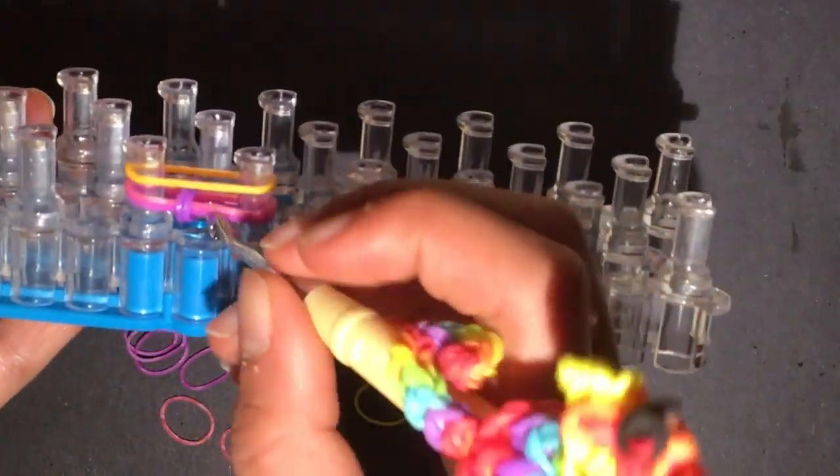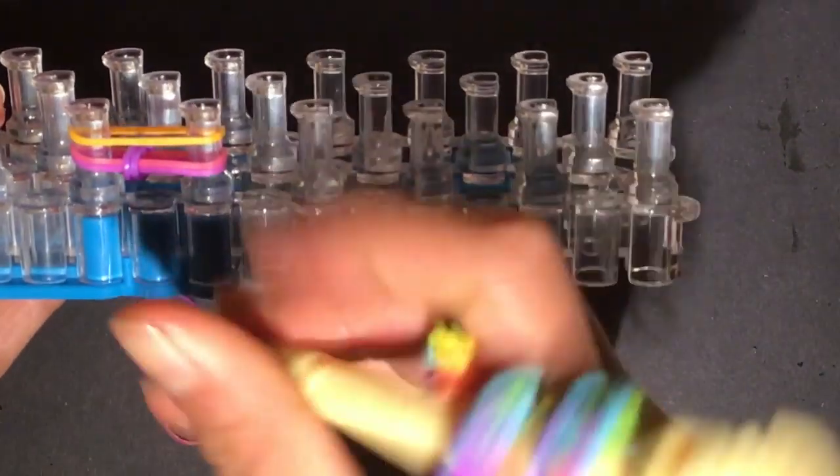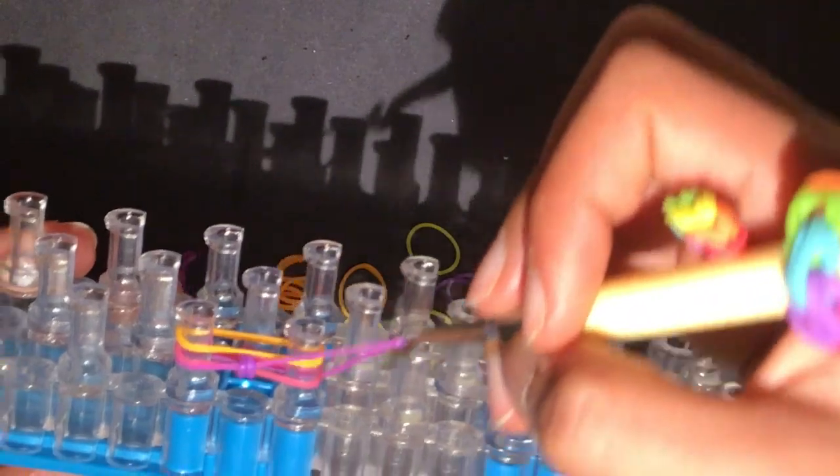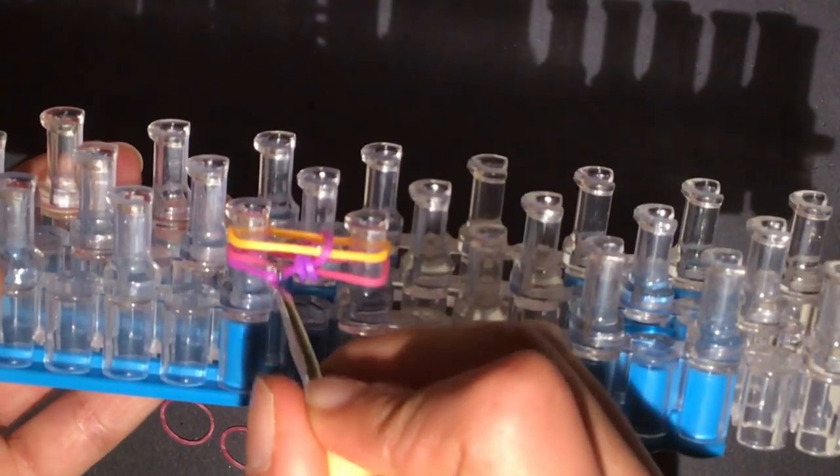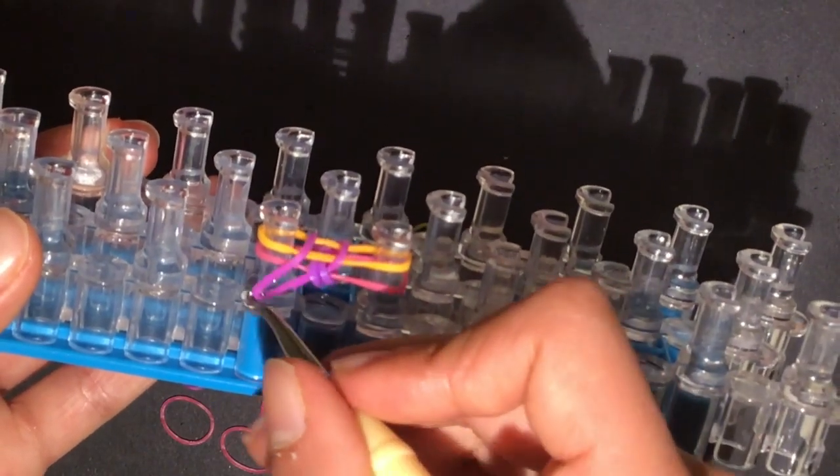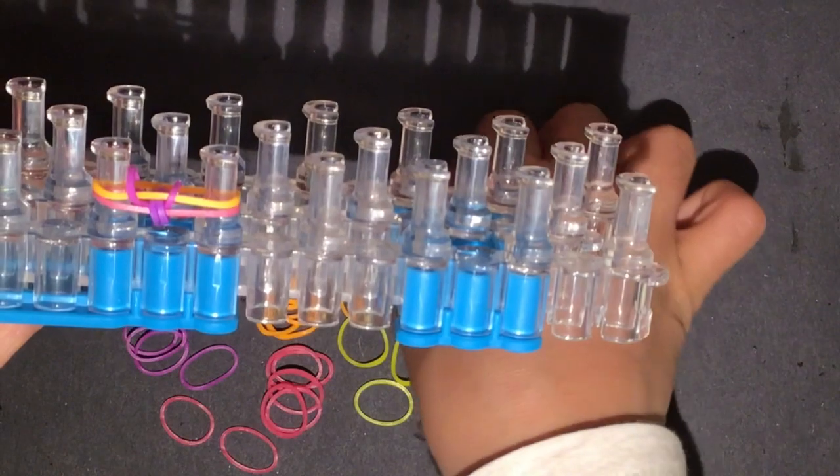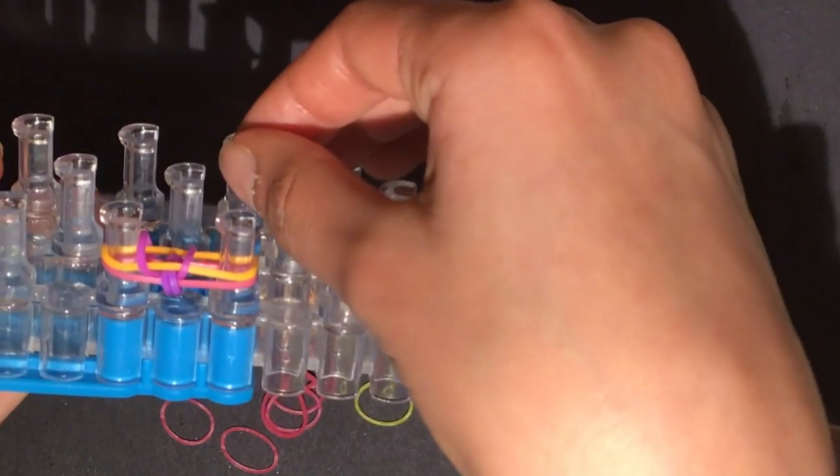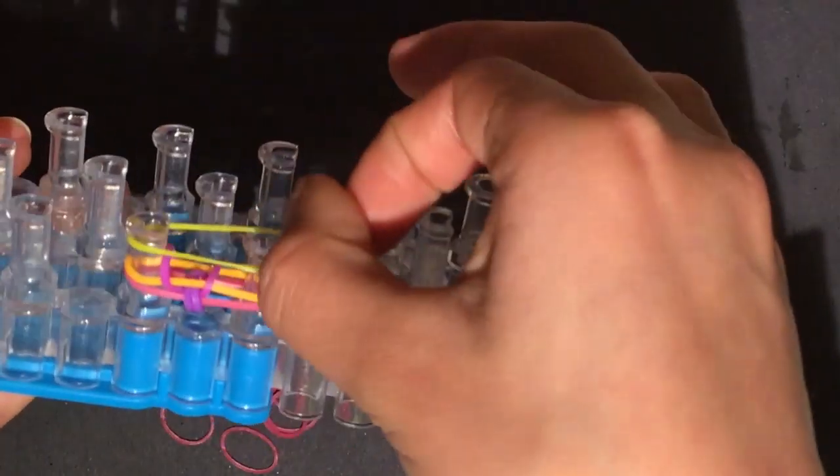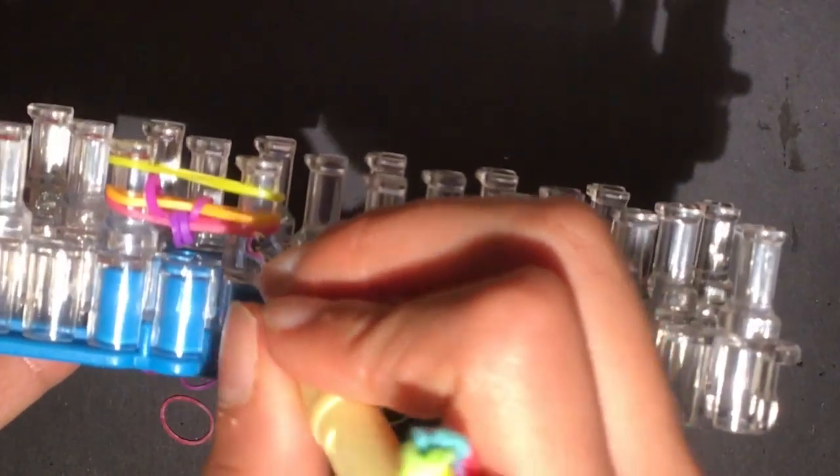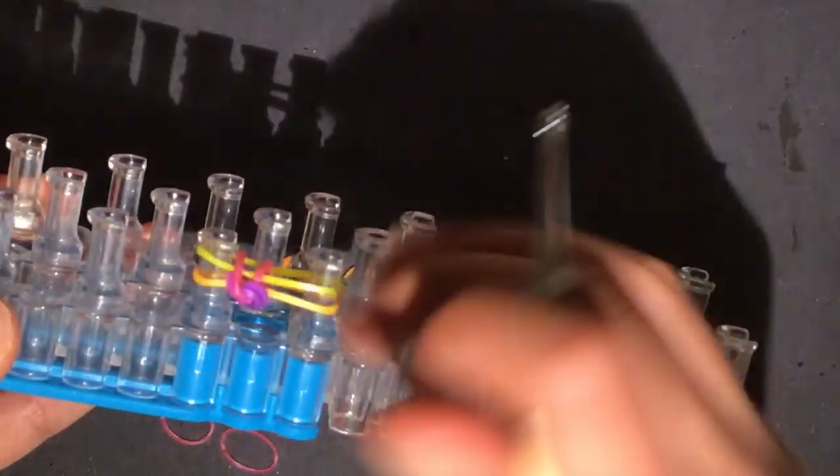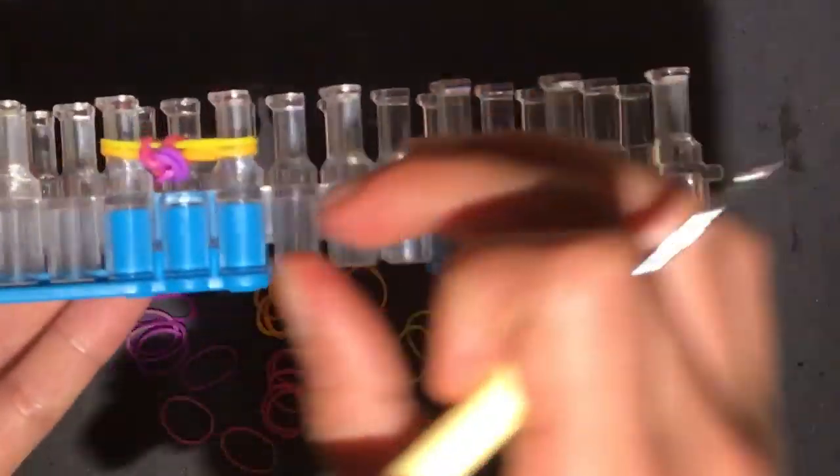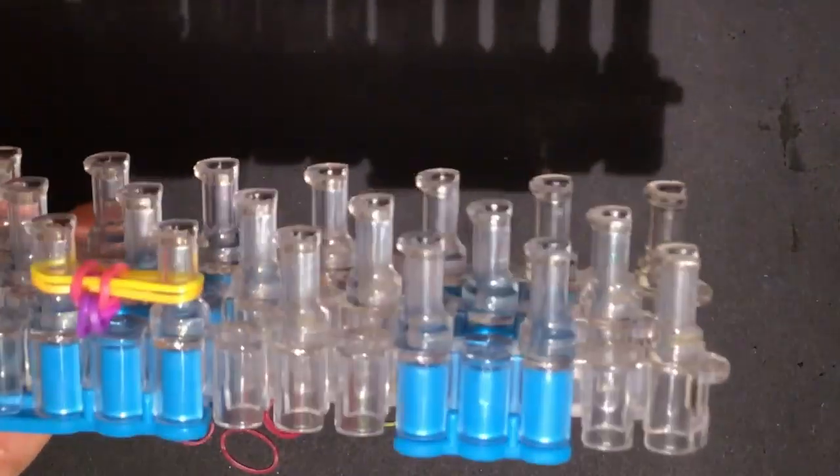And then grab the bottom band, so it's like my magenta-ish color like that, and then you want to just loop it over like that. Now I'm gonna move this a little so that it's easier for me to get it on this side like that, grab it and put it over. Now you can push it down, grab your next band. Now grab the bottom band and hook it over, grab the bottom band and hook it over like that, should look something like this.